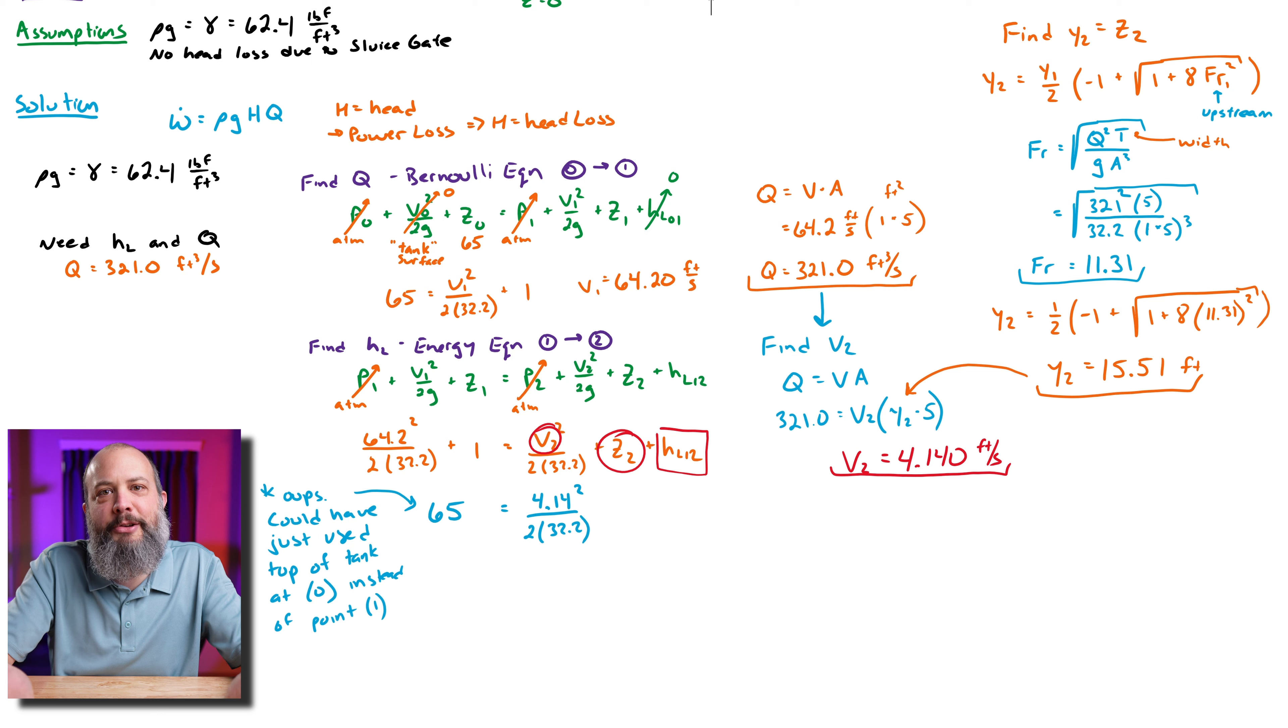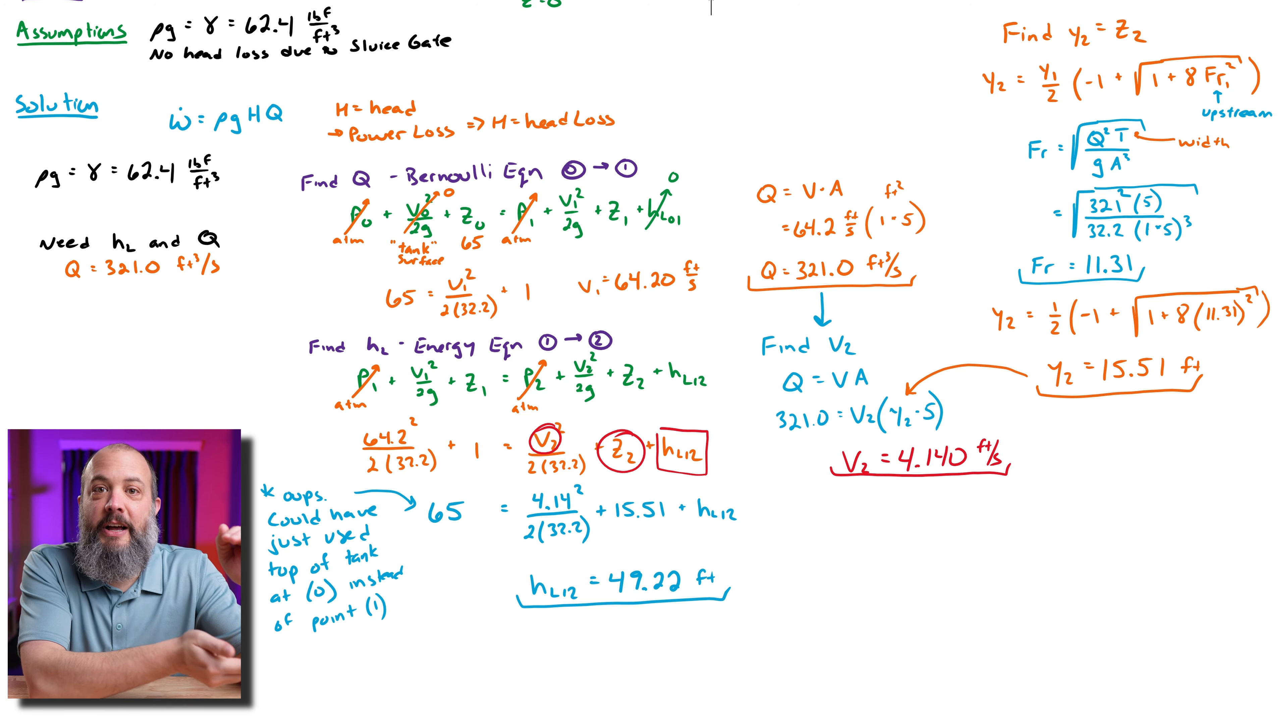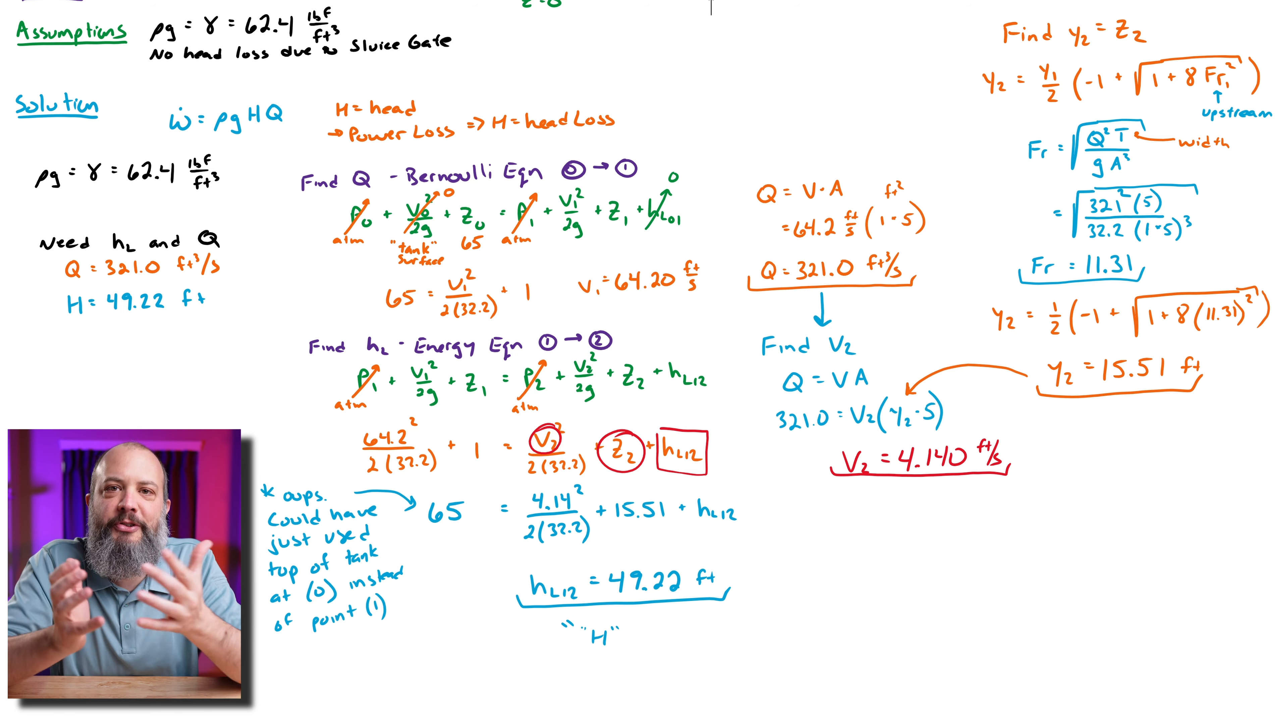But I plug in the new 4.14 for velocity, I plug in the 15.5 for the feet at height 2, and I get 49.2 feet of head loss. That's a big number. The system started with 65 feet of system head and 49 feet was lost due to the hydraulic jump, so that's like two-thirds of the energy gone from hydraulic jump. You can see why this is such an awesome tool for civil engineers downstream of any sort of dam or runoff where you want to reduce the amount of energy that your flow has.